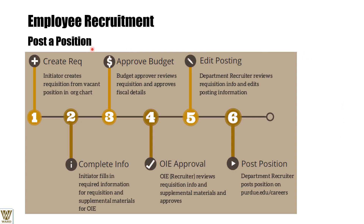The first step is to create a requisition — the initiator creates a requisition for a vacant position in the organization chart. The immediate supervisor will indicate there is a requirement, and the complete information must be filled in: why there is a vacancy, what has been requisitioned, and the job requirements, specifications, and description.